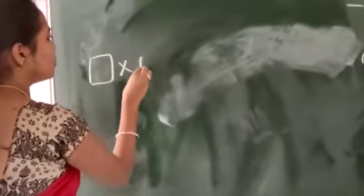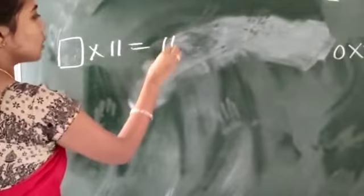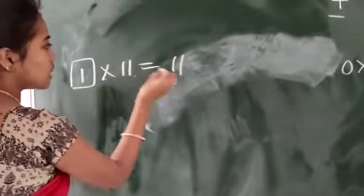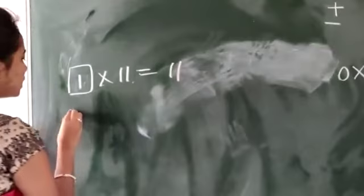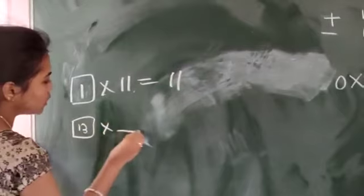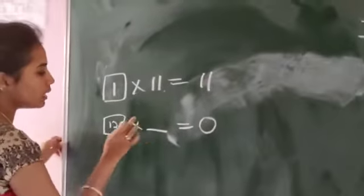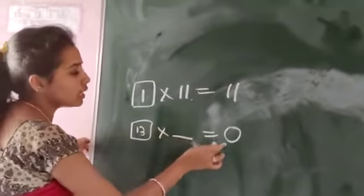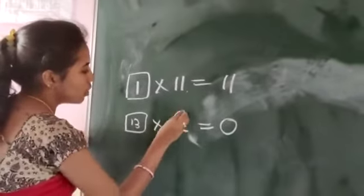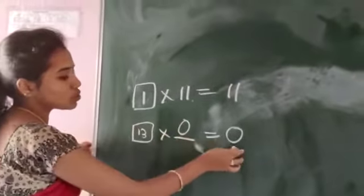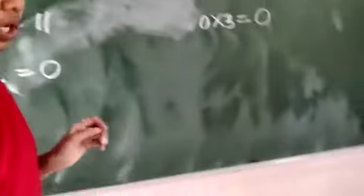Here, 1 box into 11 equals 11. One 11 equals 11. Here, 13 into dash equals 0. With 0 only, if it is multiplied, then only the answer is 0. So 13 into 0 equals 0. Understood?